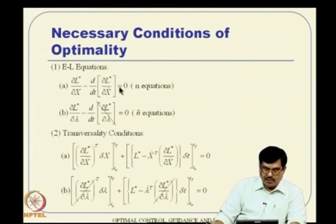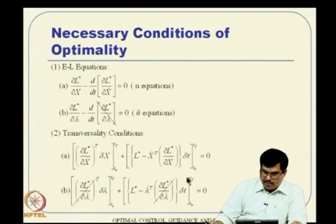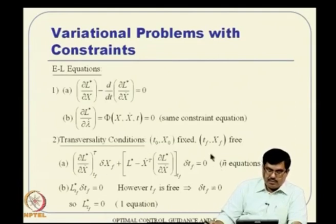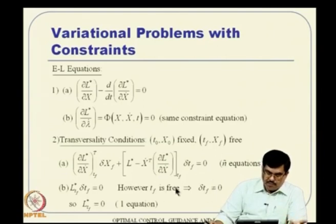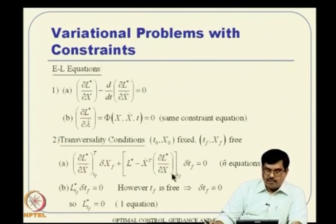L-star can be defined accordingly, giving us the Euler-Lagrange equations. We have n equations from one part and ñ equations from another, plus transversality conditions. Those who do not recall can revise the previous lecture. Ultimately we arrived at Euler-Lagrange equations with transversality conditions.